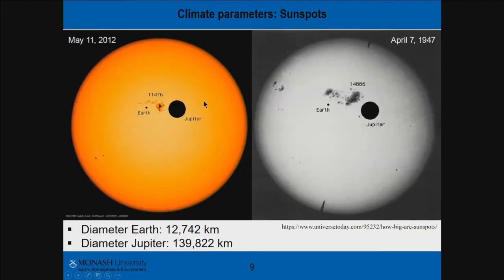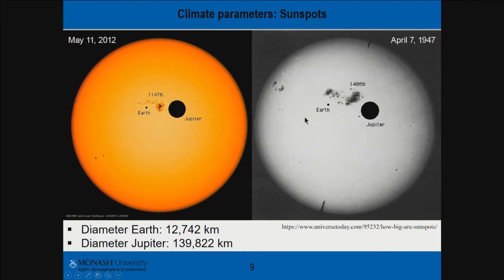To give some idea of how big sunspots can be: Earth's diameter is 12,742 km and Jupiter's is 139,822 km. Examples from 2012 and 1947 show sunspots covering quite a large area of the Sun's surface. This is why people think sunspots might be responsible for the change in temperature and climate on Earth — looking at these photographs gives you an idea why sunspots may play a large influence on Earth's climate.